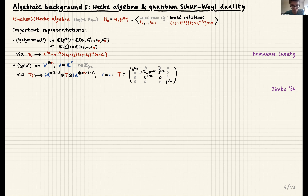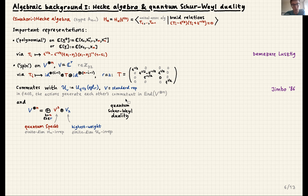Let me give some algebraic background. We start with the finite Hecke algebra of type A: generators T_i obeying braid relations and the quadratic condition. There are two important representations. One — the polynomial representation — acts on Laurent polynomials or polynomials in N variables where the T's are represented by Demazure-Lusztig operators. The other is the spin representation: take V = C^r and its N-fold tensor product; T_i acts non-trivially in the i-th and (i+1)-th factor as an explicit matrix (written down for V two-dimensional), and as the identity elsewhere.